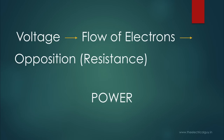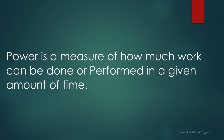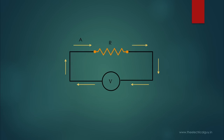This work done in moving electrons in unit time is what we call as electric power. We can define power as: power is a measure of how much work can be performed in a given amount of time. Now let's focus on the figure shown.